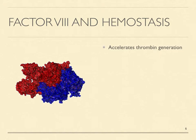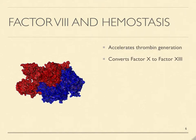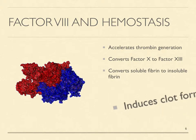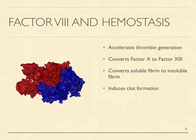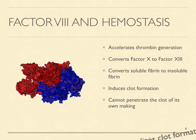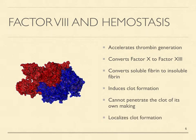Factor VIII plays a key role in hemostasis. It accelerates thrombin generation to produce insoluble fibrin in the immediate vicinity of tissue damage to enable clot formation. The gigantic size of factor VIII prevents it from penetrating the clot of its own making, which explains why coagulation is limited to the immediate vicinity of tissue damage.